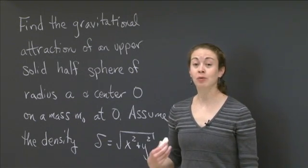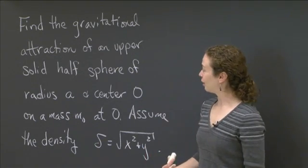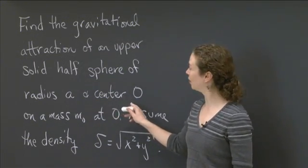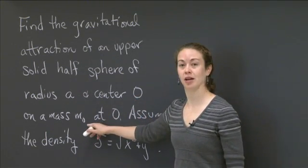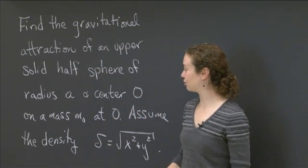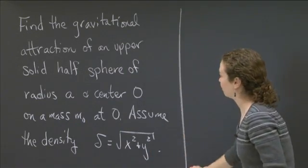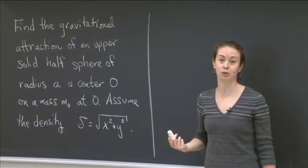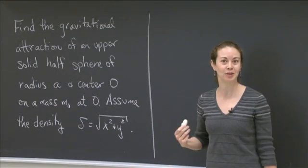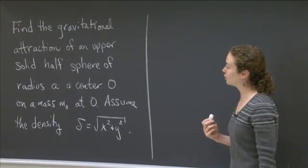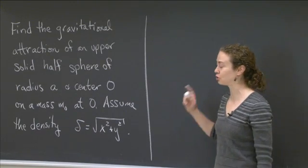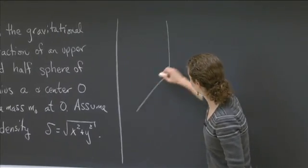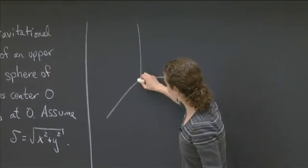Welcome back. What we're going to do is work on this application problem. We have this solid half sphere of radius a and center O, and we want to know the gravitational attraction of it on a mass m0. The first thing I'm going to do is draw a picture just so I can get myself oriented. When I'm going to figure this out, I'm going to use spherical coordinates. I have an upper solid half sphere, so spherical coordinates will be good. The easiest way is to choose O to be the origin, so m0 is sitting right at the origin.